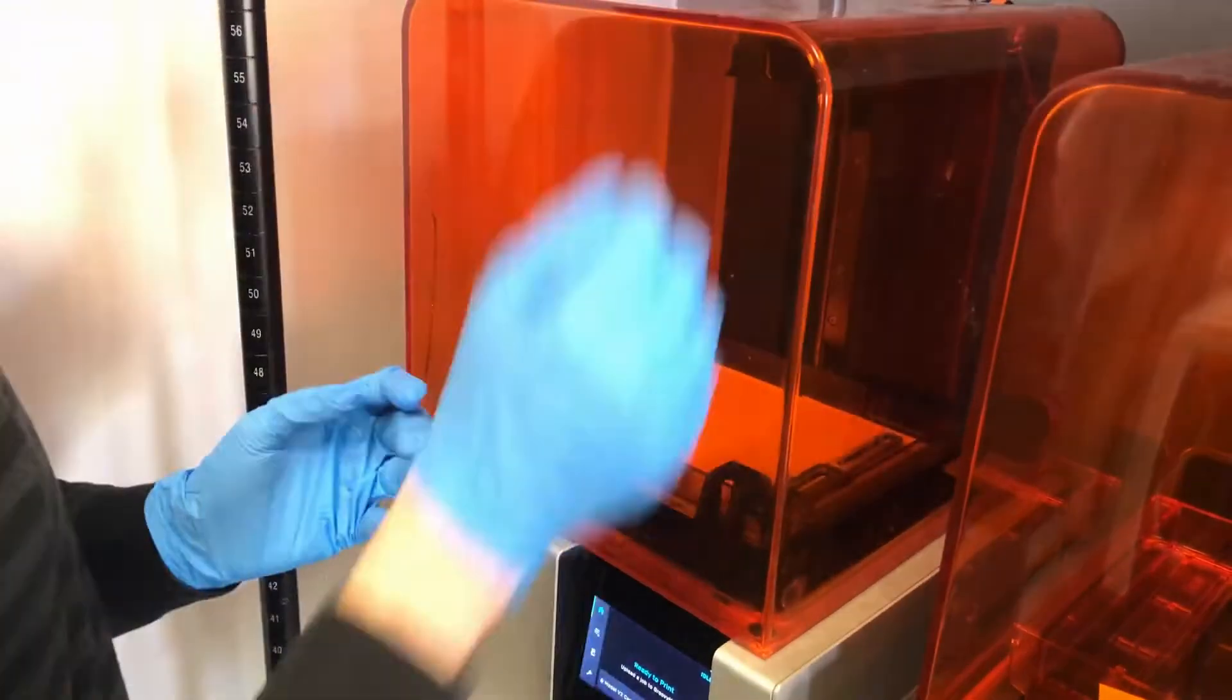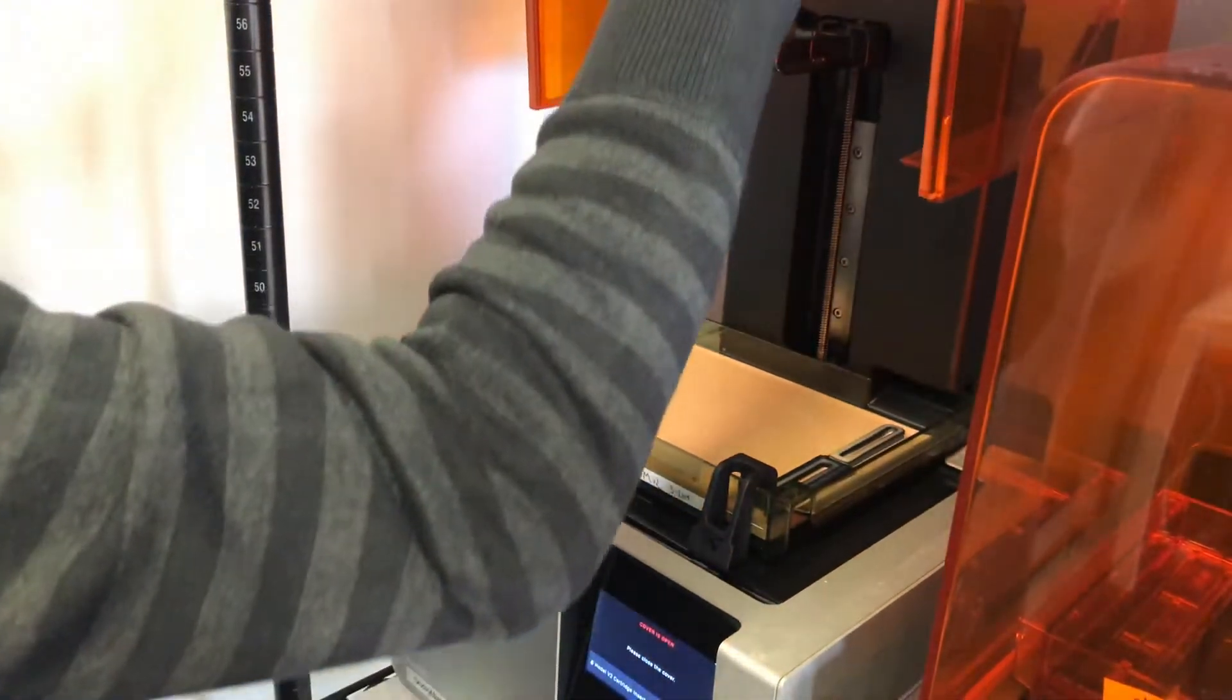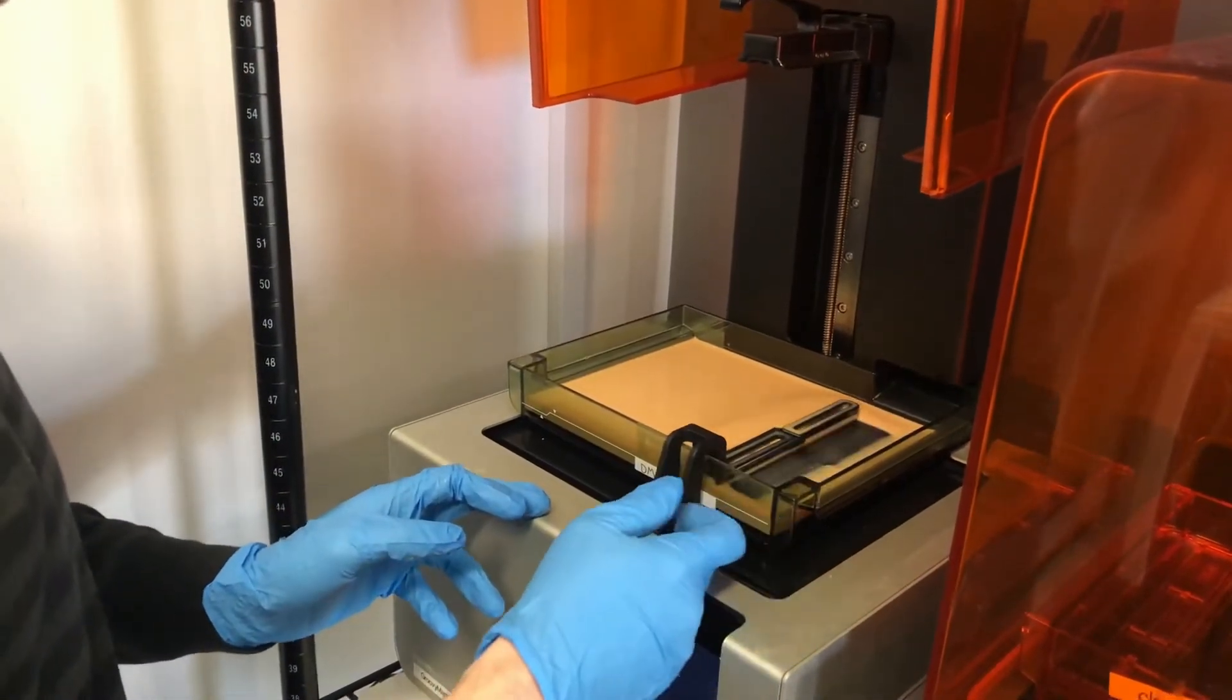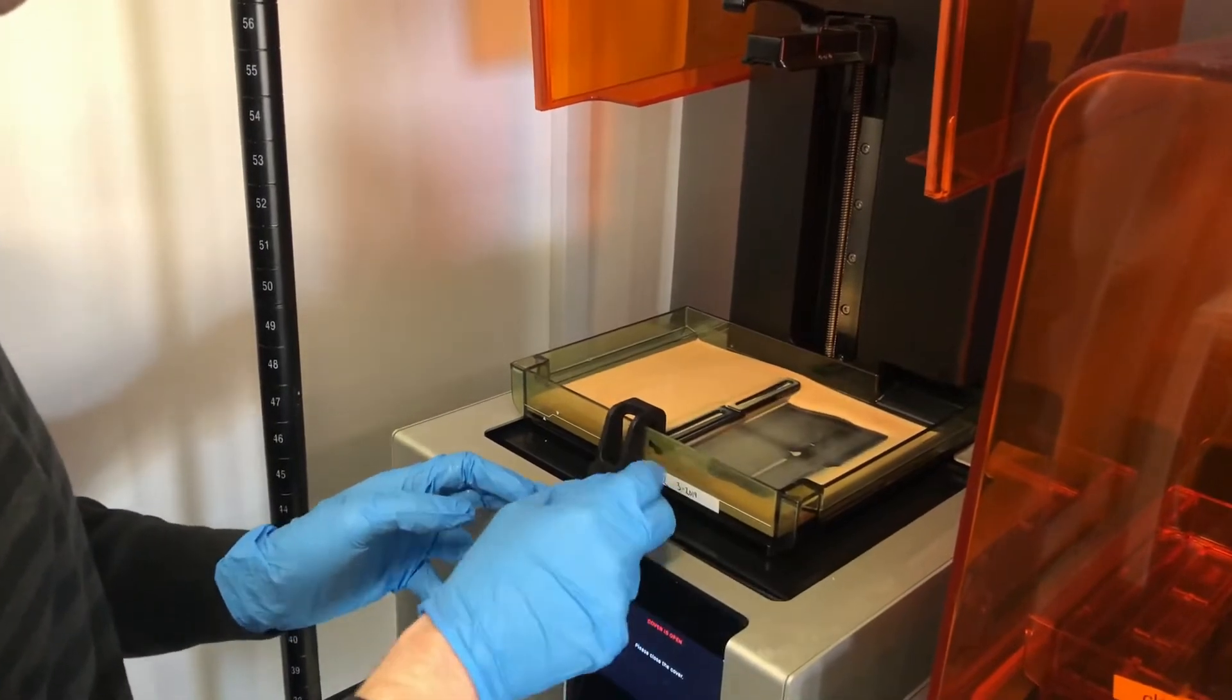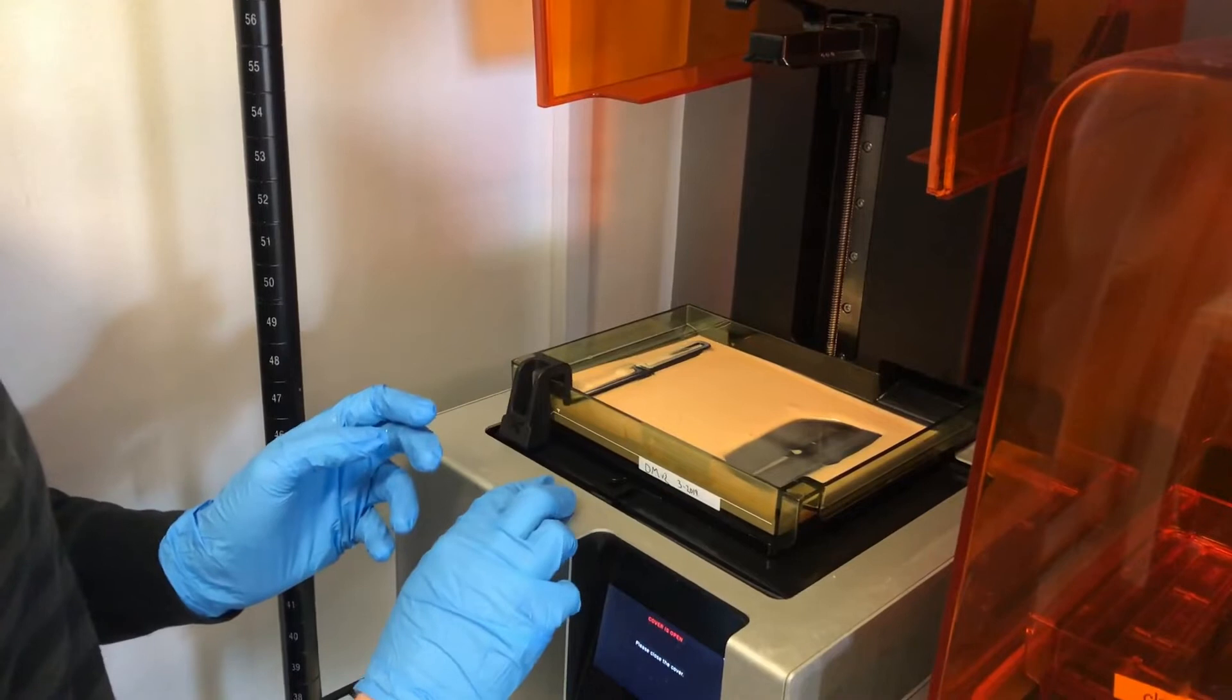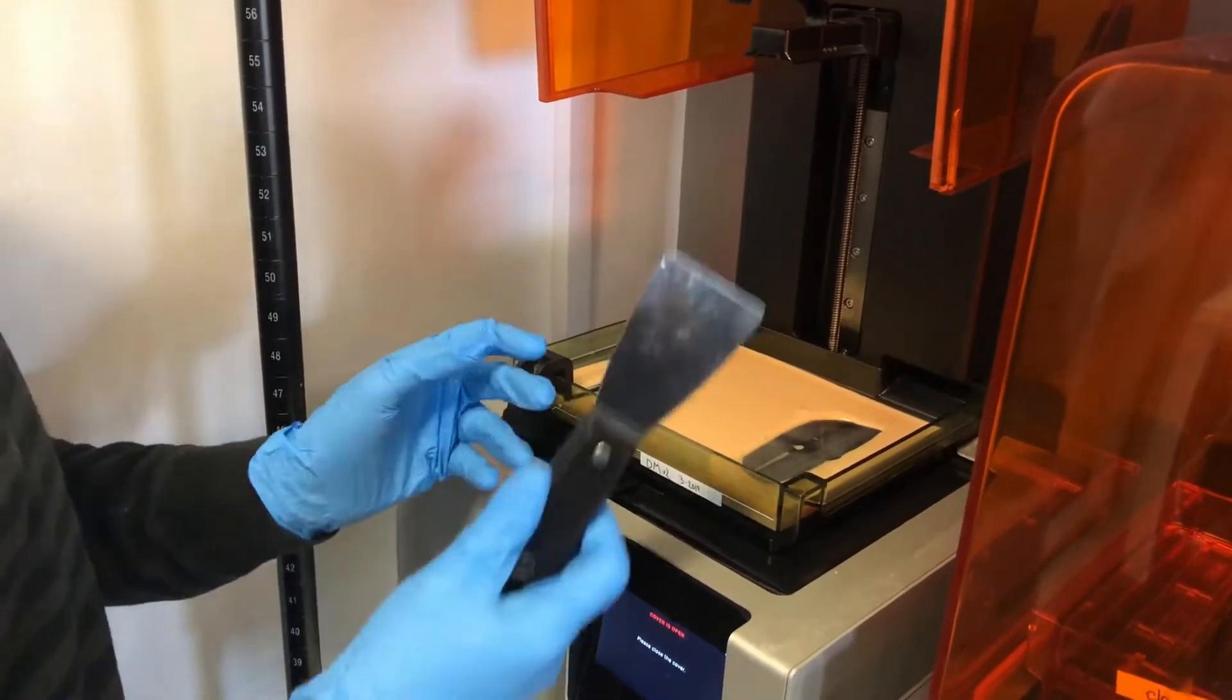Put it into place, pop that open. Now on the resin tank itself you can slide this pretty freely—it doesn't hurt the machine. So I'll slide this over, pop out the wiper here, and I'll take a scraper like this one.